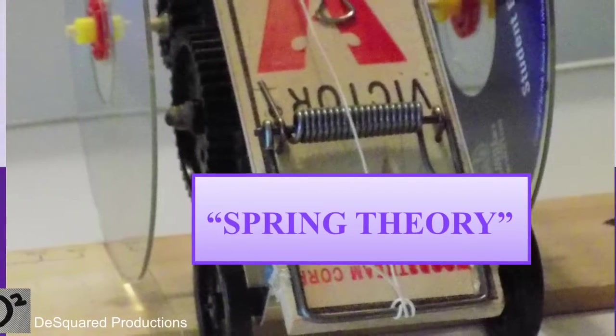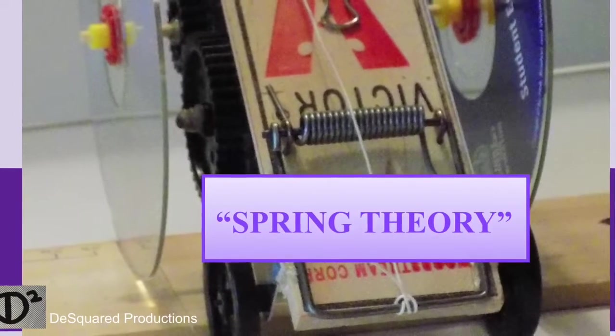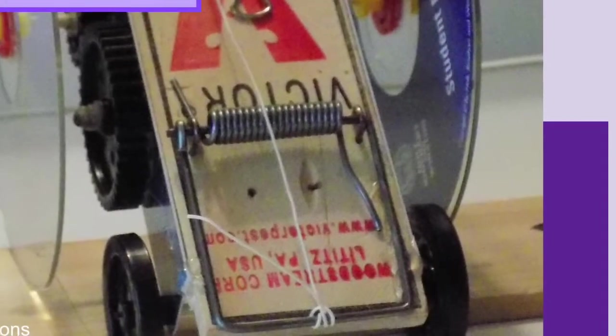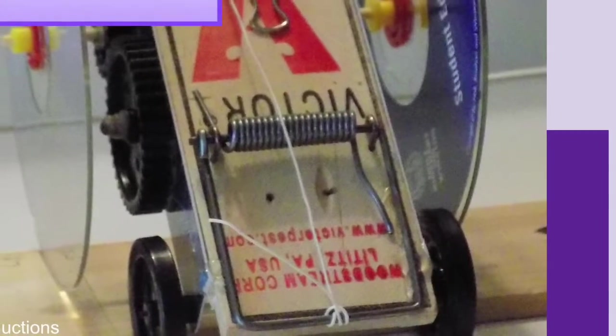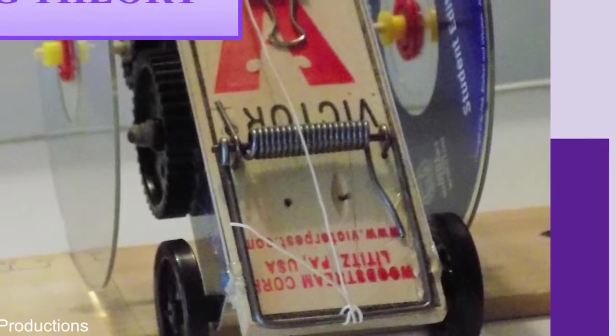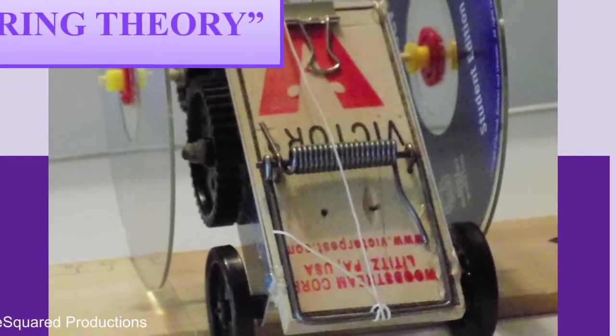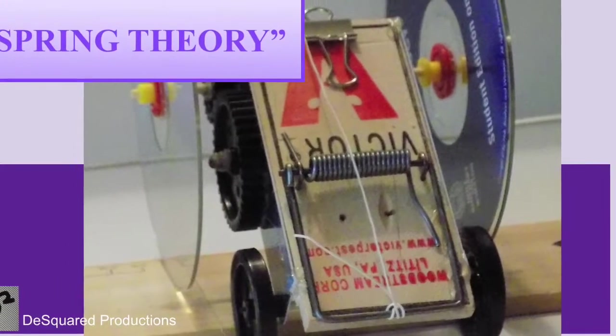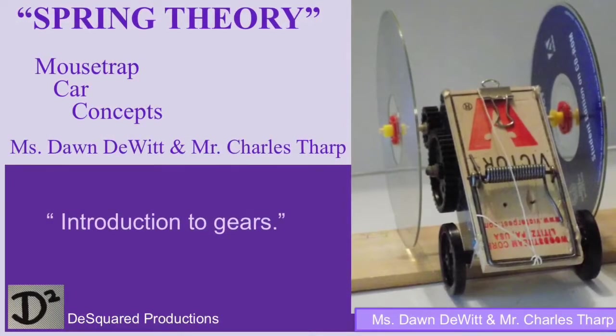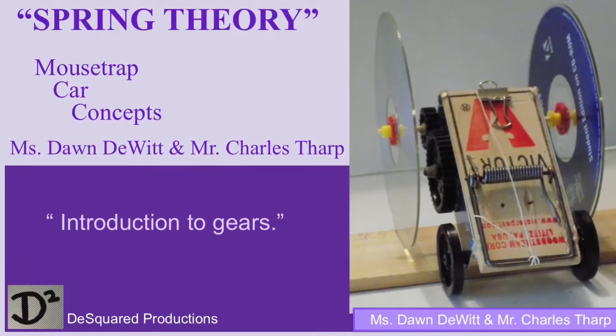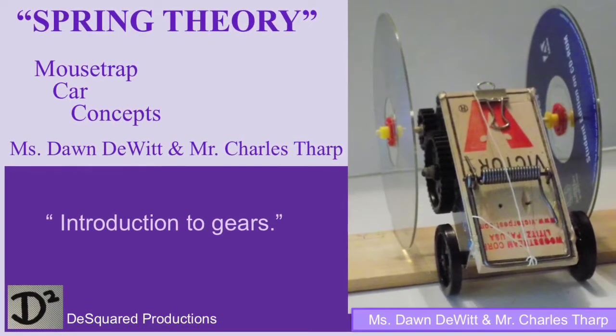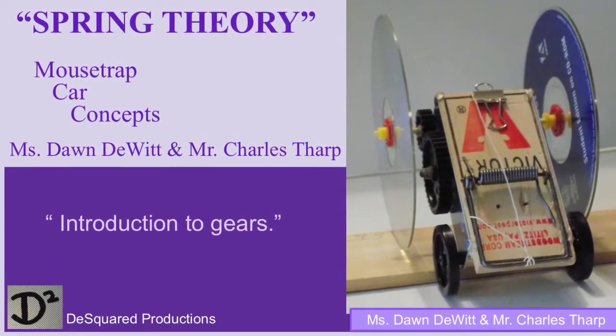Use math and be deliberate in the components that you select to create your mousetrap car because it matters. There are many variables that affect the performance of the mousetrap car and there are trade-offs that you make with each option that you choose. Deliberately selecting the gear ratio to match your wheels and the number of string wraps can improve the results. More than one pair of gears can be used as well, but that will have to wait for another lesson.